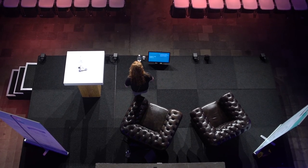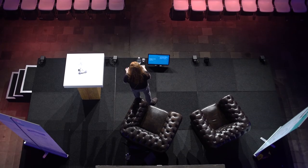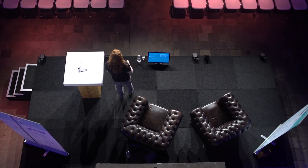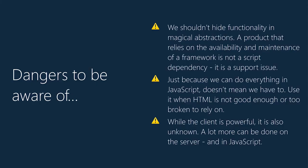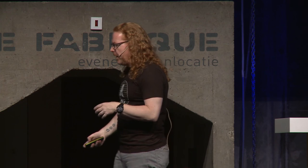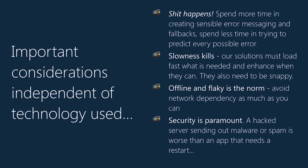Dangers to be aware of: don't hide functionality in magical abstractions. Relying on a framework that does everything for you makes you faster and more effective, but it's also a dependency. If the framework stops being maintained — like that Laravel example — you're stuck and you don't even know how it works or how to fix it. Just because we can do everything in JavaScript doesn't mean we have to — use it when HTML is not good enough or too broken to rely on. And while the client is powerful, a lot can still be done on the server. Universal JavaScript — running both server-side and client-side — is a great idea; Node.js is super powerful and now available in different VMs if you don't want to be locked into one JavaScript runtime.